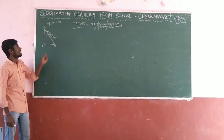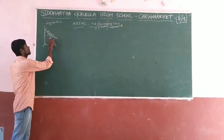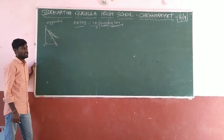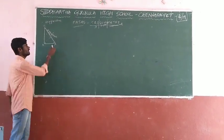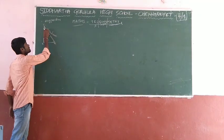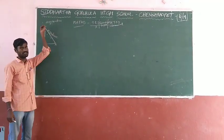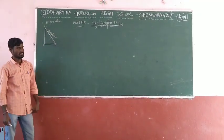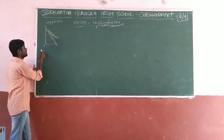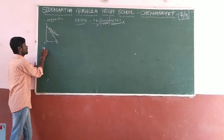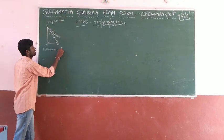The hypotenuse is the side opposite to the right angle. The other two sides are named based on the angle we are considering — they are named as opposite and adjacent. In a right angle triangle, we can apply Pythagoras theorem.